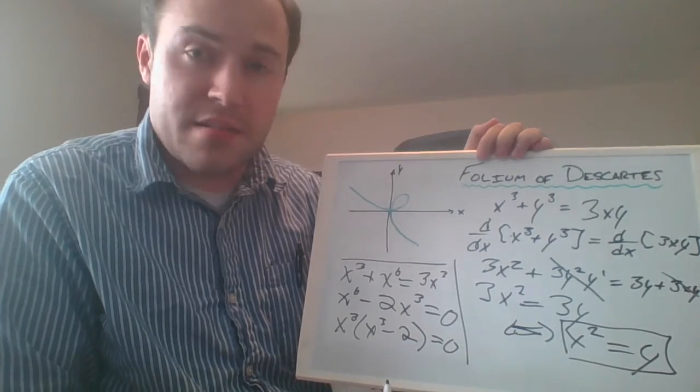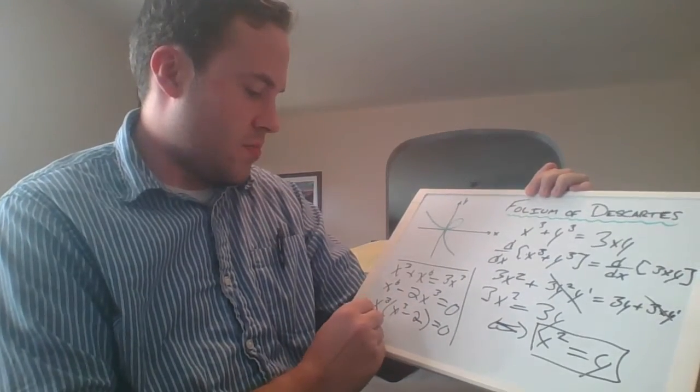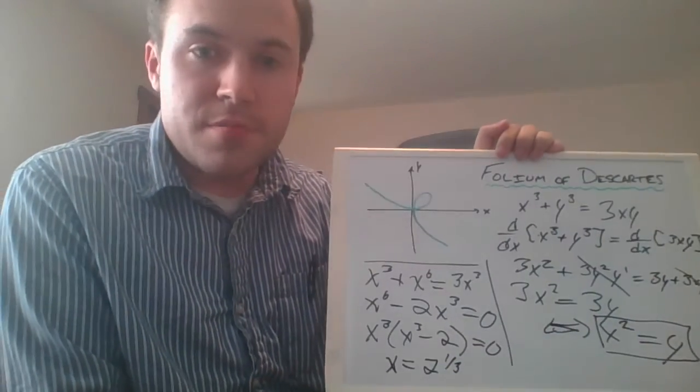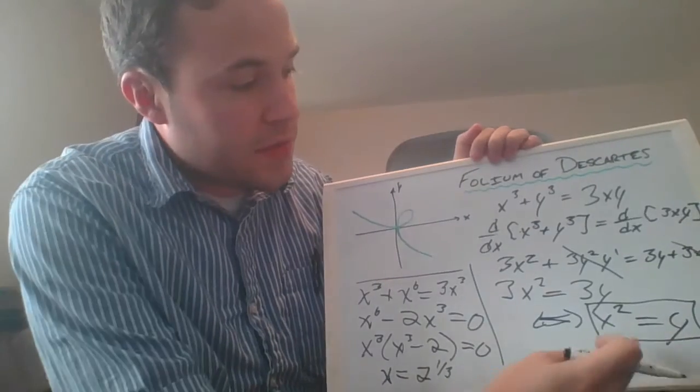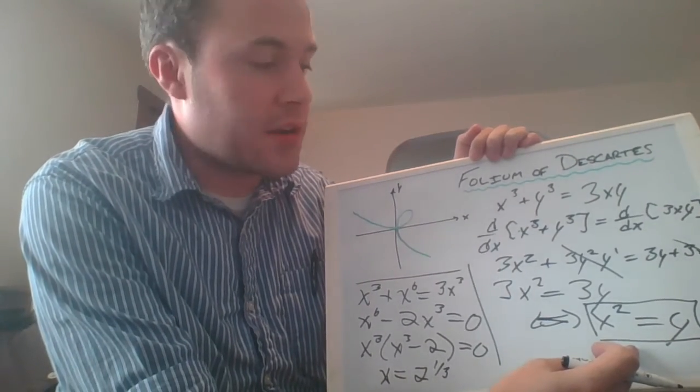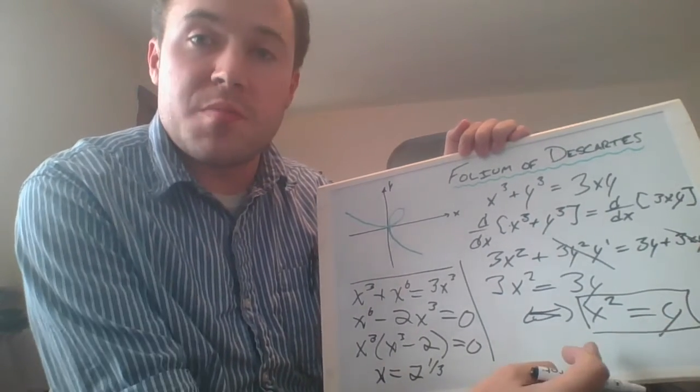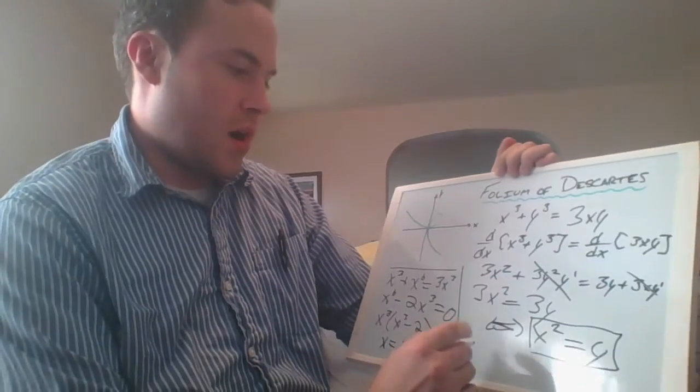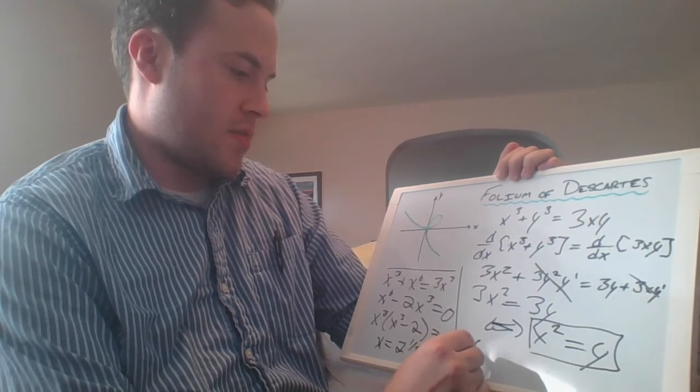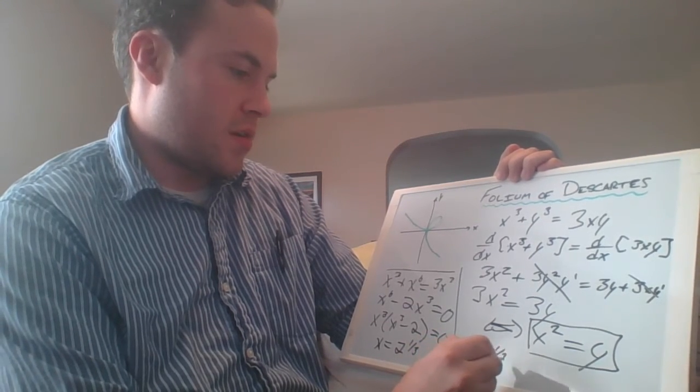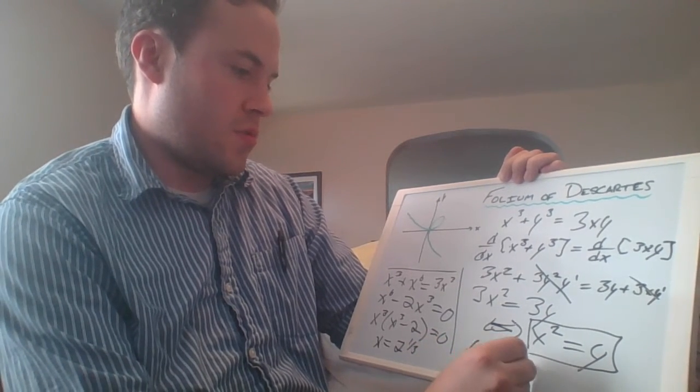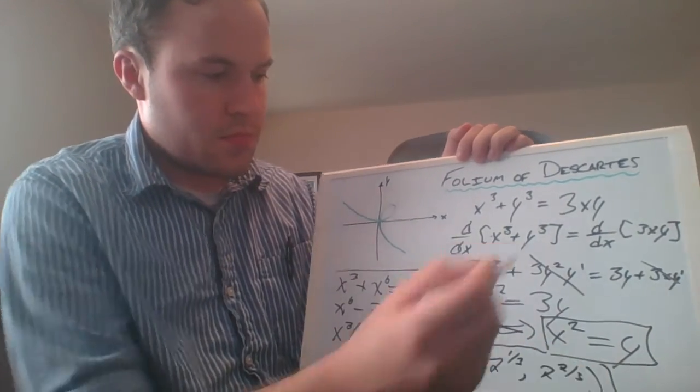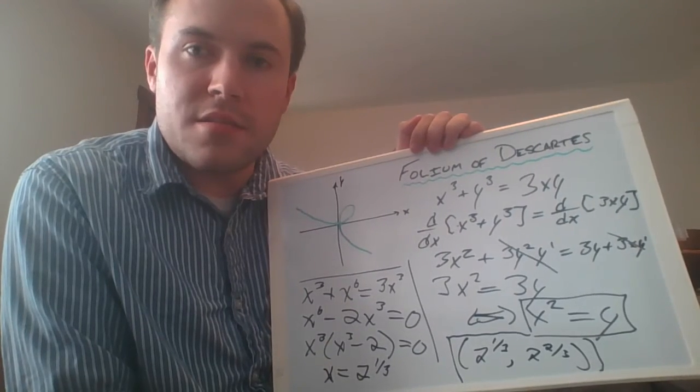And that means that x is just the cube root of 2, so it's 2 to the one-third power. Lastly, just to figure out the actual point on the graph, we use the fact that y must be equal to x squared. So we get that x is 2 to the one-third, and y must be that thing squared, so we have 2 to the one-third comma 2 to the two-thirds. And that's our answer.